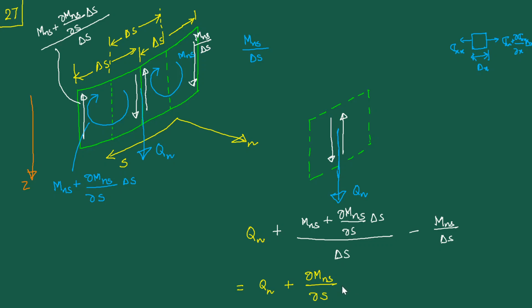Unless we do this kind of interpretation, we will completely miss that contribution, and it will be wrong. This is how you need to interpret the effective shear force: it is the force per unit length in the z-direction that takes into account contributions from the various shear stresses. On that note, I'll end this video — thank you very much.